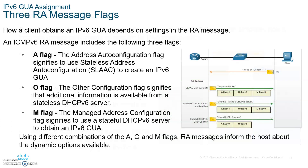With SLAAC, the router sends a Router Advertisement (RA) message. This RA message provides all IPv6 addressing information such as the network prefix, network length, and default gateway information. The host will use the RA information exclusively for their addressing, including creating their own GUA.